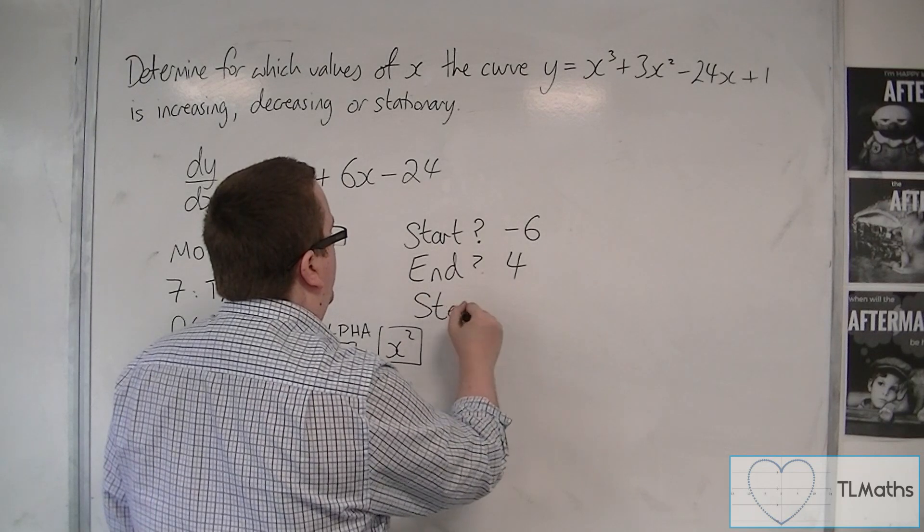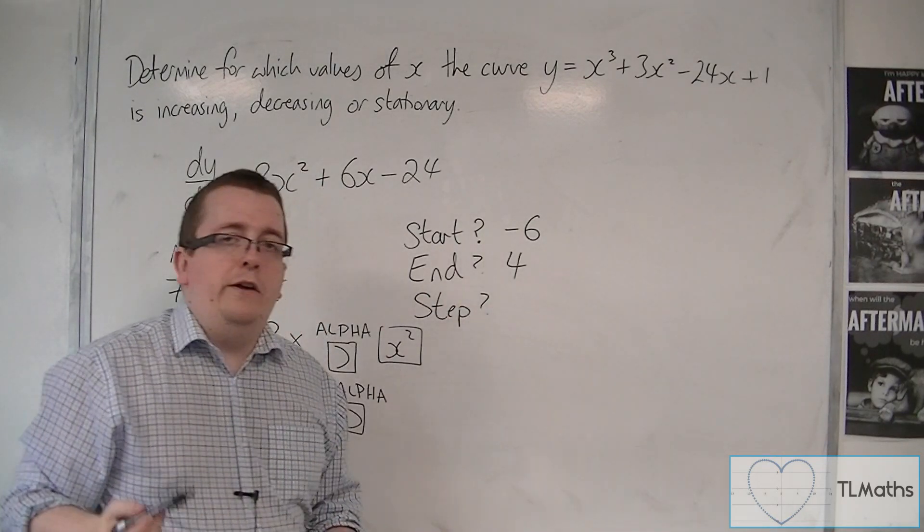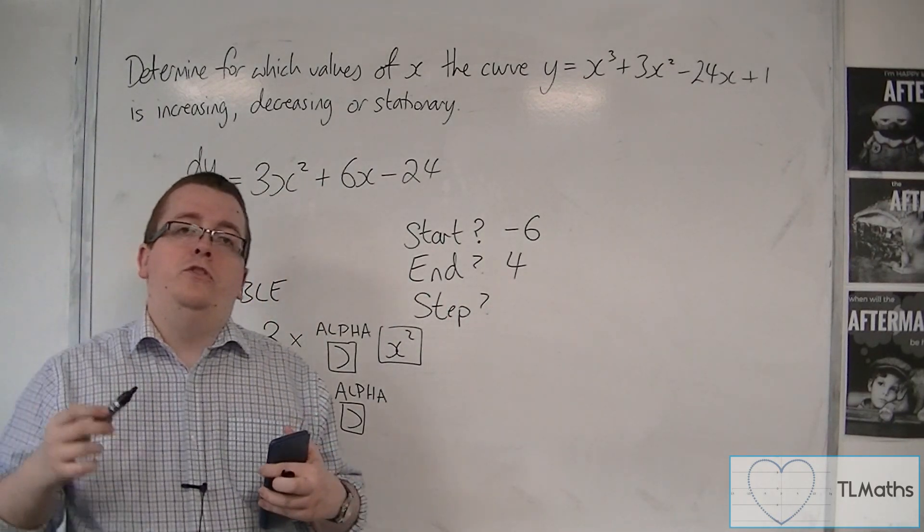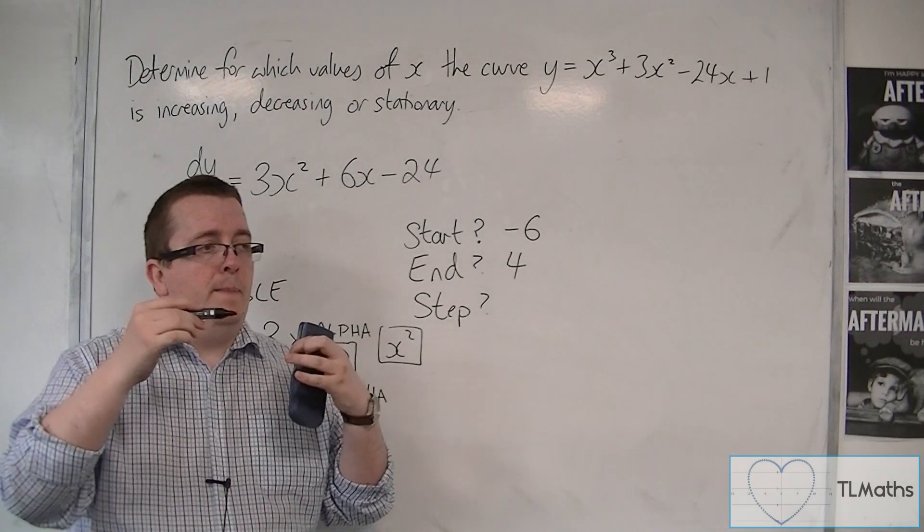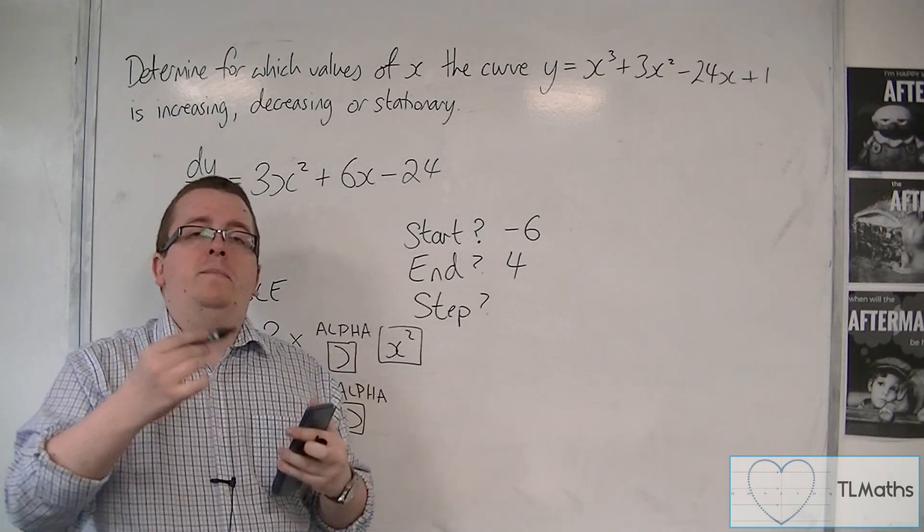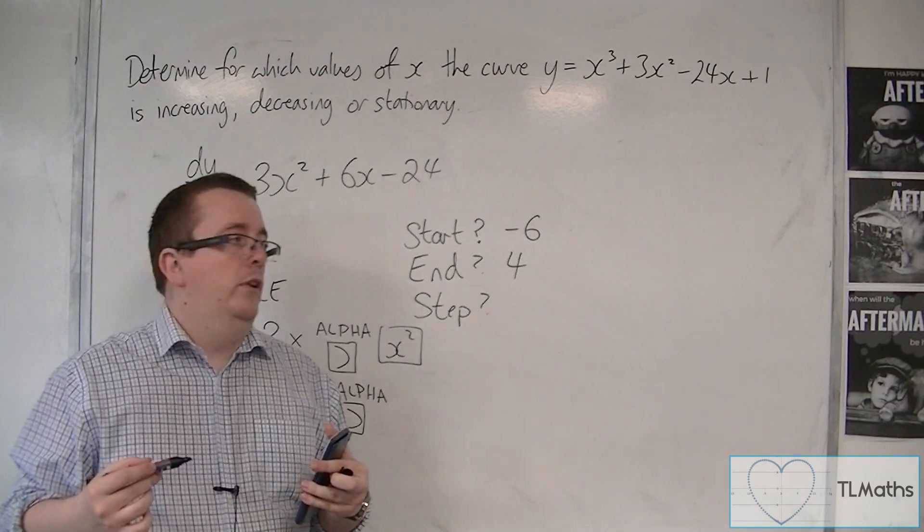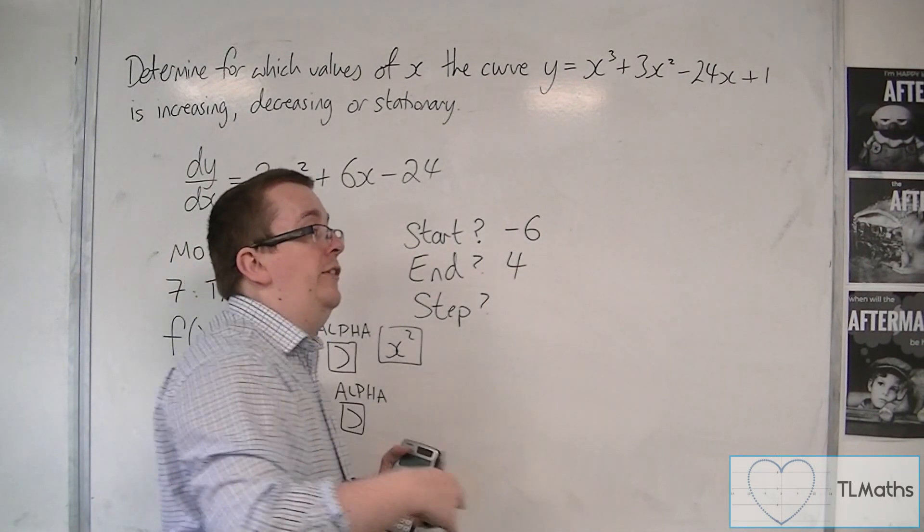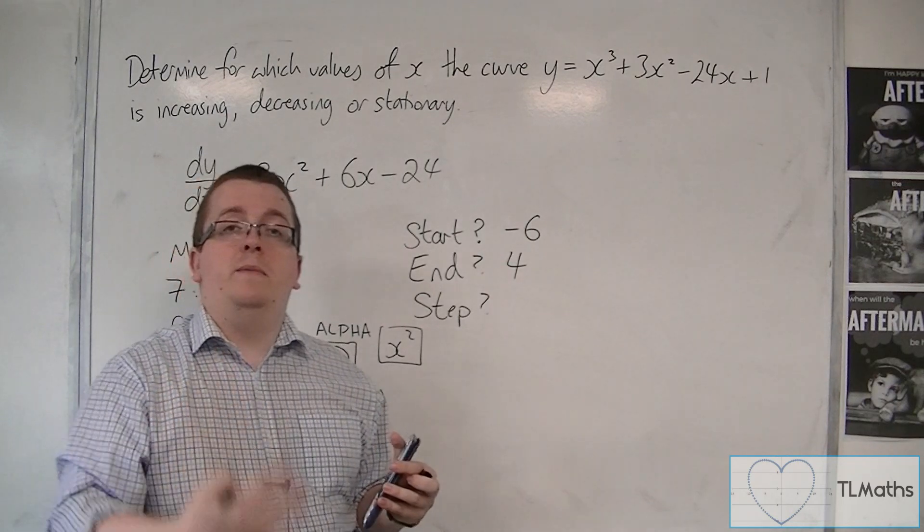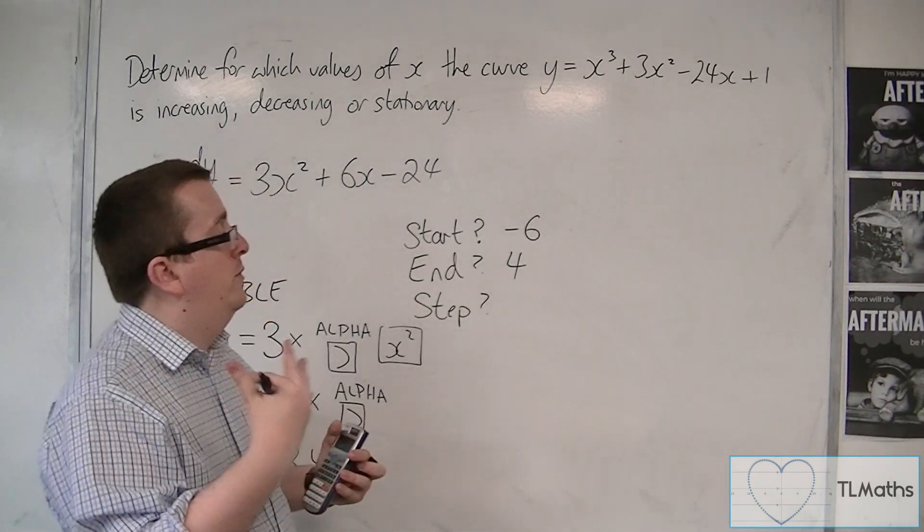And then it asks you for the step. Now the step is asking you to input how much should I be going up in each time between these values. Should I be going minus 6, minus 5, minus 4, minus 3, minus 2, minus 1, 0, 1, 2, 3, 4?